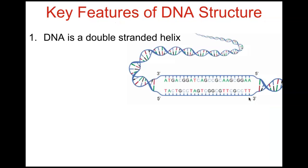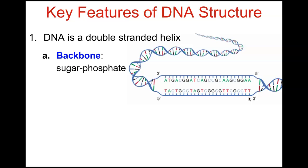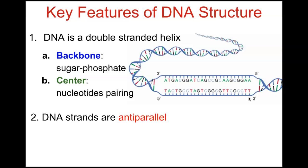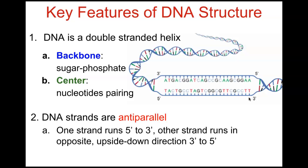The key features of DNA structure are: DNA is a double-stranded helix; the backbone consists of alternating sugar-phosphate molecules; the center contains nucleotides that follow base pairing rules — A with T and C with G. The DNA strands are antiparallel to one another, meaning one strand runs from the 5' to 3' end while the other runs opposite, from 3' to 5'. Mathematically they appear parallel, but biologically they're antiparallel because one strand is right-side up and the other is upside down.